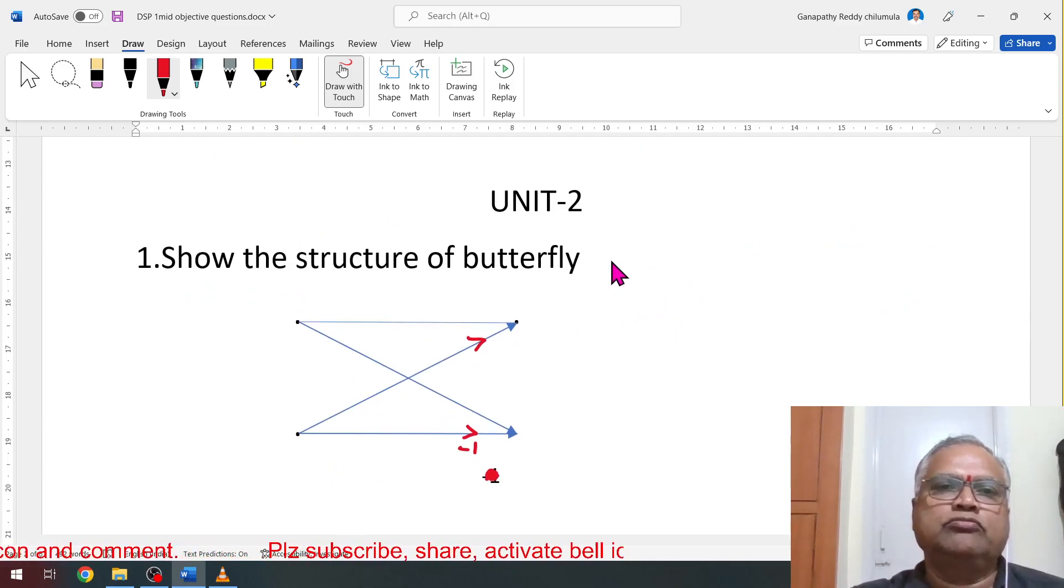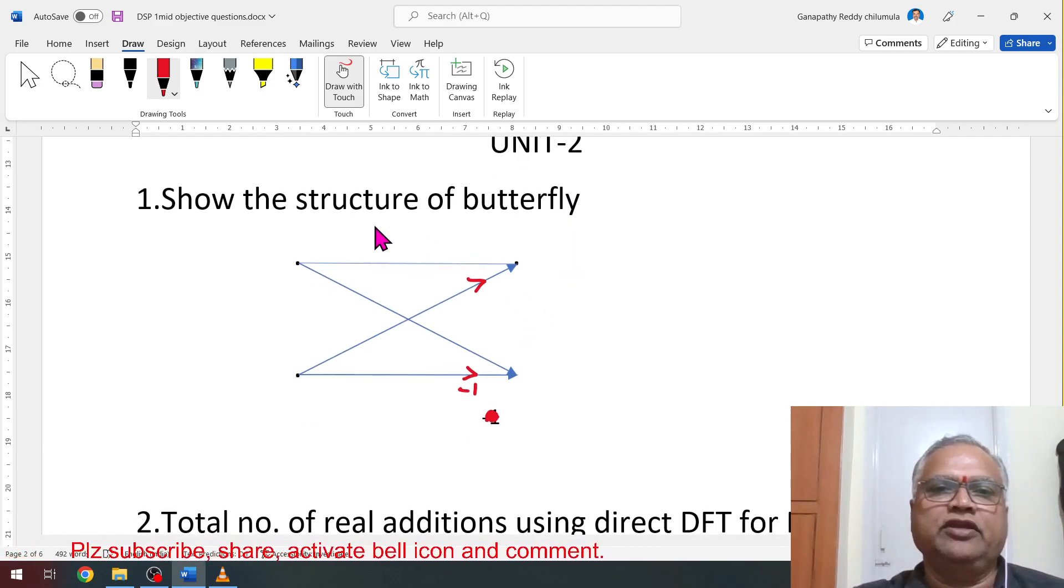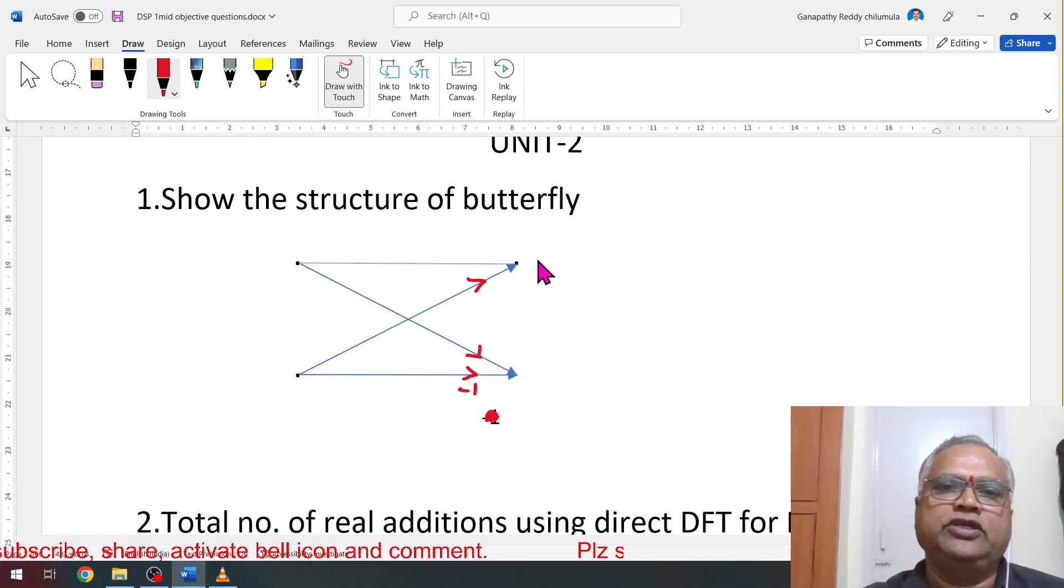Then unit 2 DFT questions. The structure of butterfly: butterfly is nothing but 2-point DFT. You have to show like this here minus 1, here arrow upward. Again, here also you have to keep the arrow. Here it is summation, here subtraction, this is the typical symbol of butterfly.